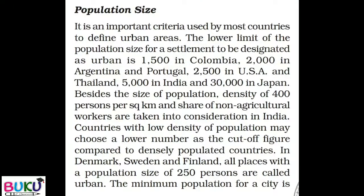Population size is an important criterion used by most countries to define urban areas. The lower limit of the population size for a settlement to be designated as urban is: 1500 in Colombia, 2000 in Argentina and Portugal, 2500 in USA and Thailand, 5000 in India, and 30,000 in Japan.